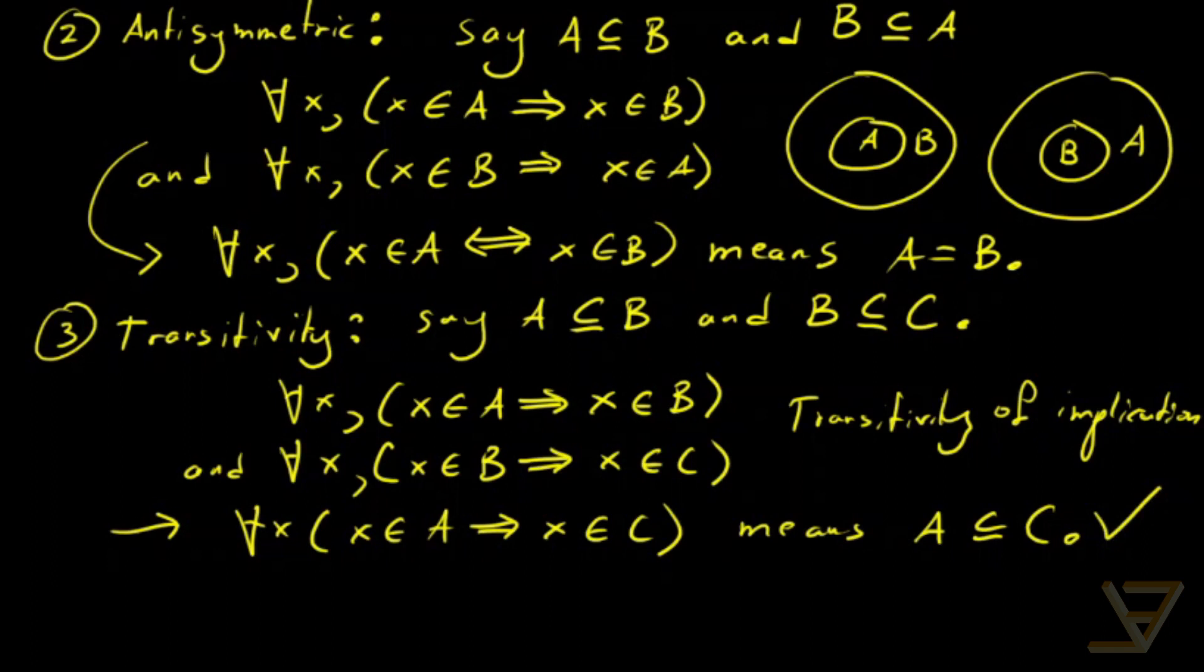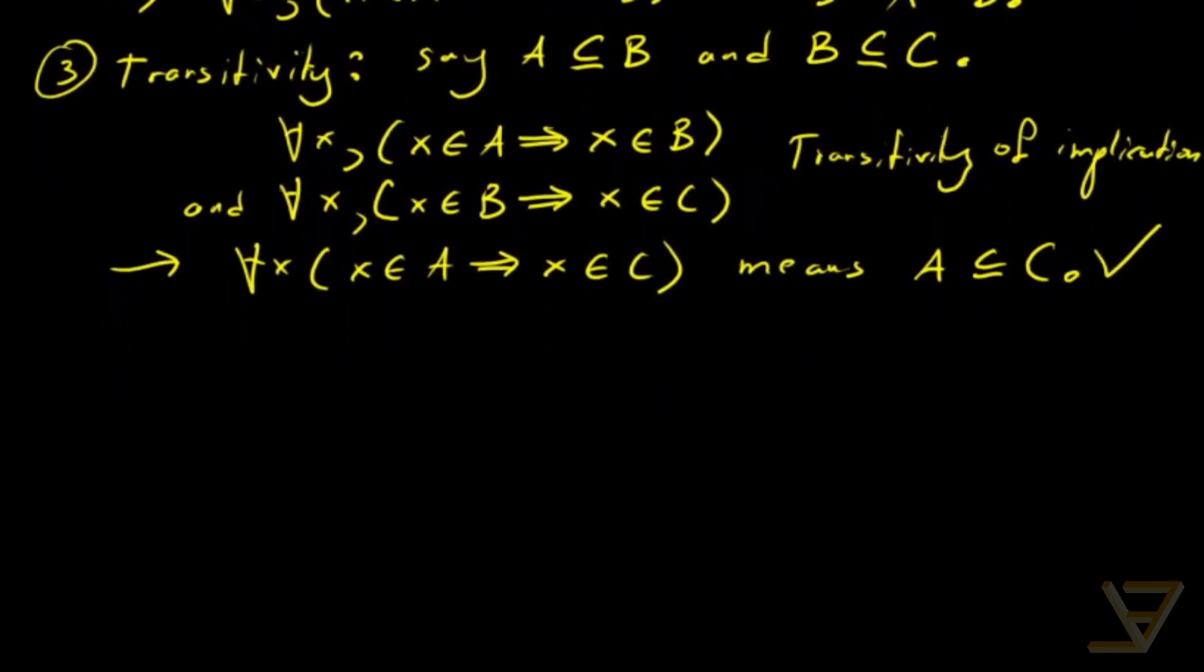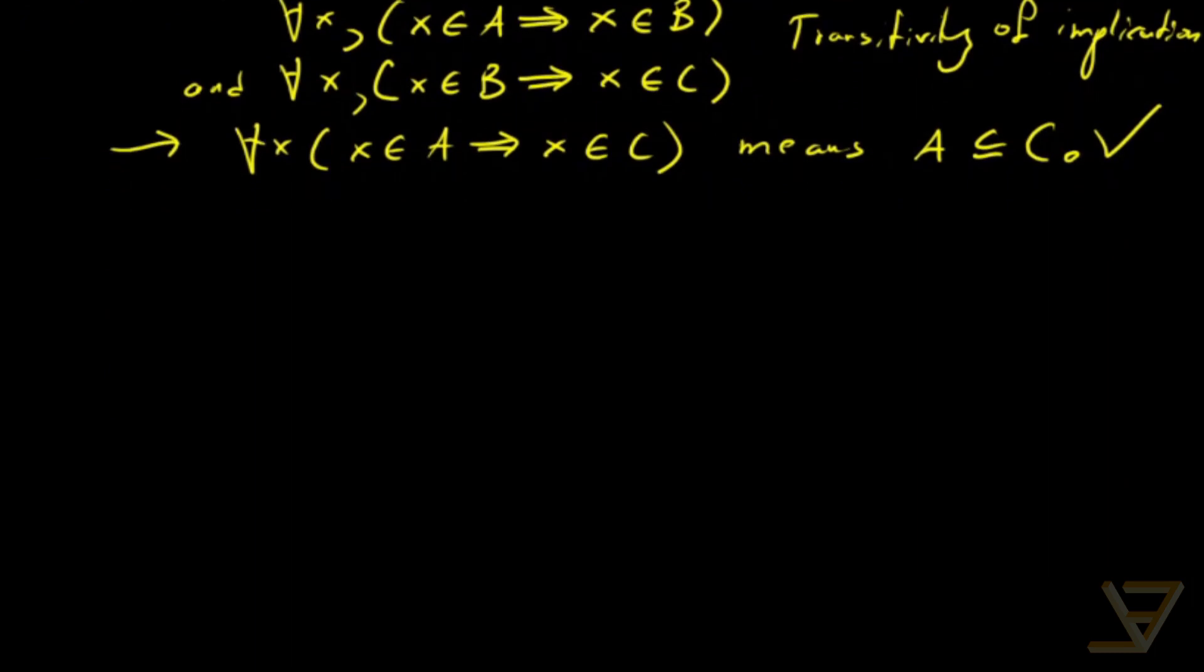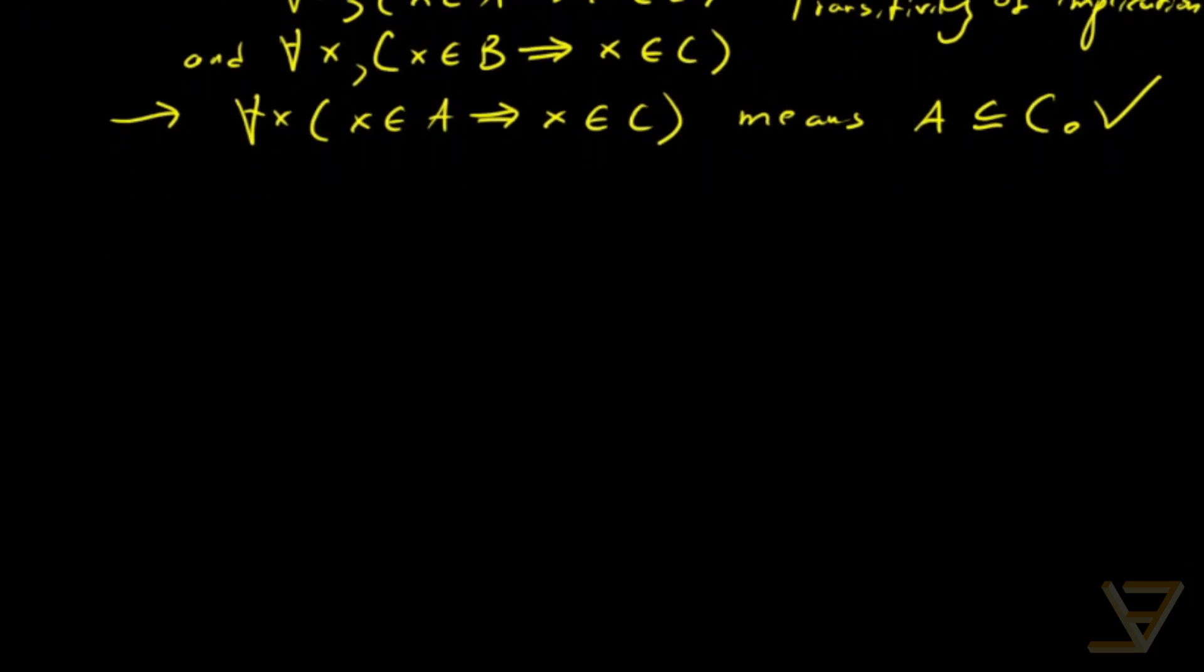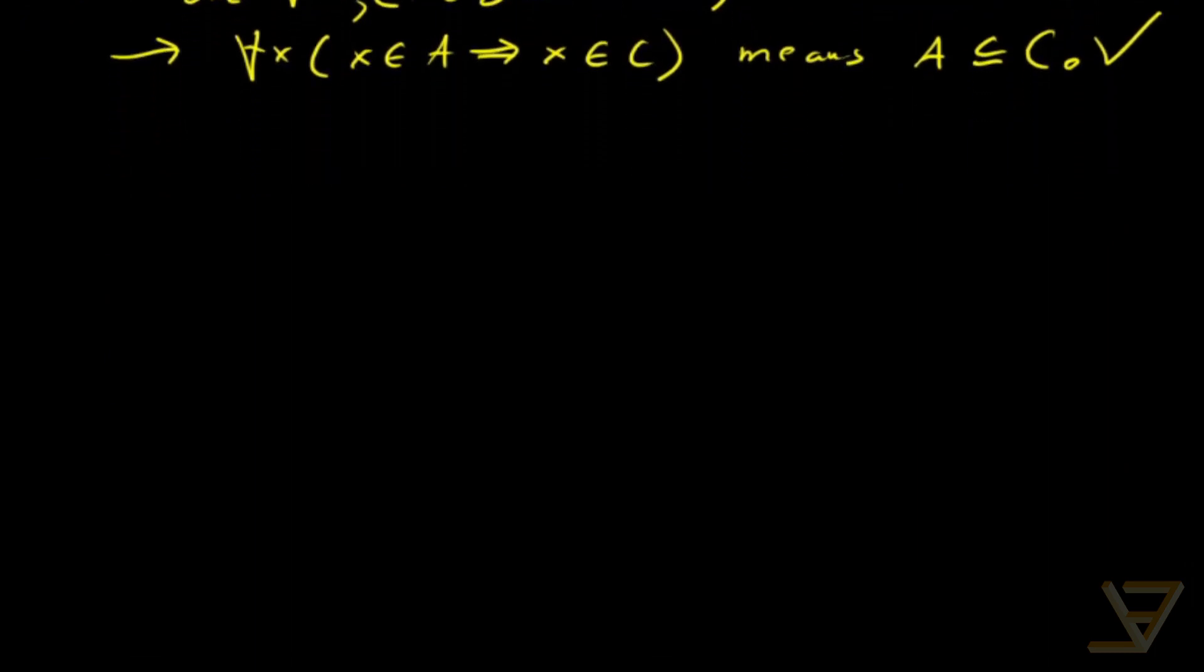Okay, so that proves that the subset relation is in fact a partial order. And now I just want to tell you that anti-symmetry is a powerful technique.